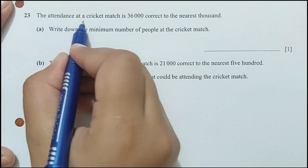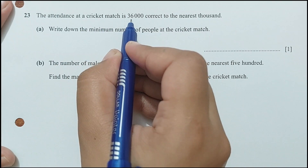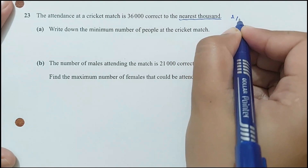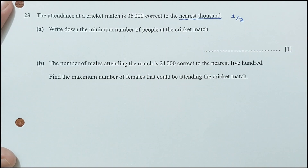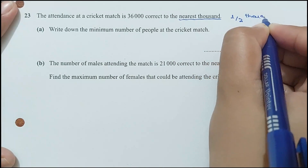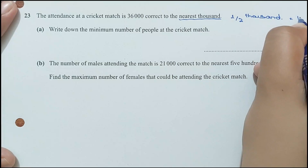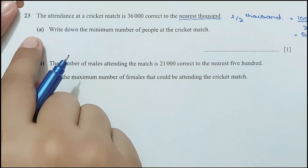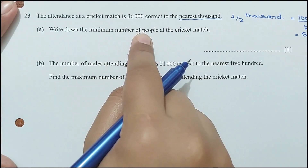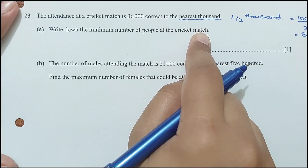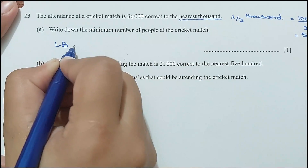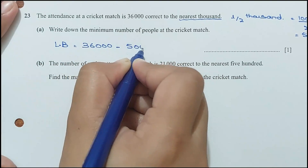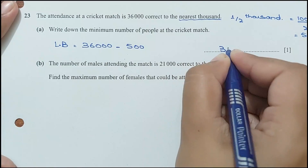Question 23: the attendance at a cricket match is 36,000 correct to the nearest 1,000. The precision is 1,000, so half-precision is 500. Part A: write down the minimum number of people at the match. The lower bound is 36,000 − 500 = 35,500.